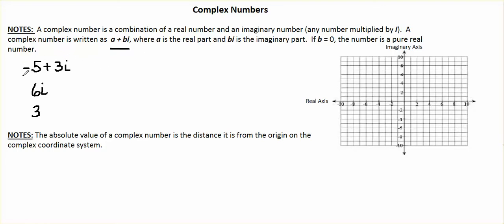This is a complex number whose real part is negative 5 and whose imaginary part is 3i. How would we graph it? We're going to graph it in a very similar way that we would graph a coordinate. We have a coordinate plane, but in this case, the axis that's typically the x-axis is the real axis. The axis that typically is the y-axis is now the imaginary axis.